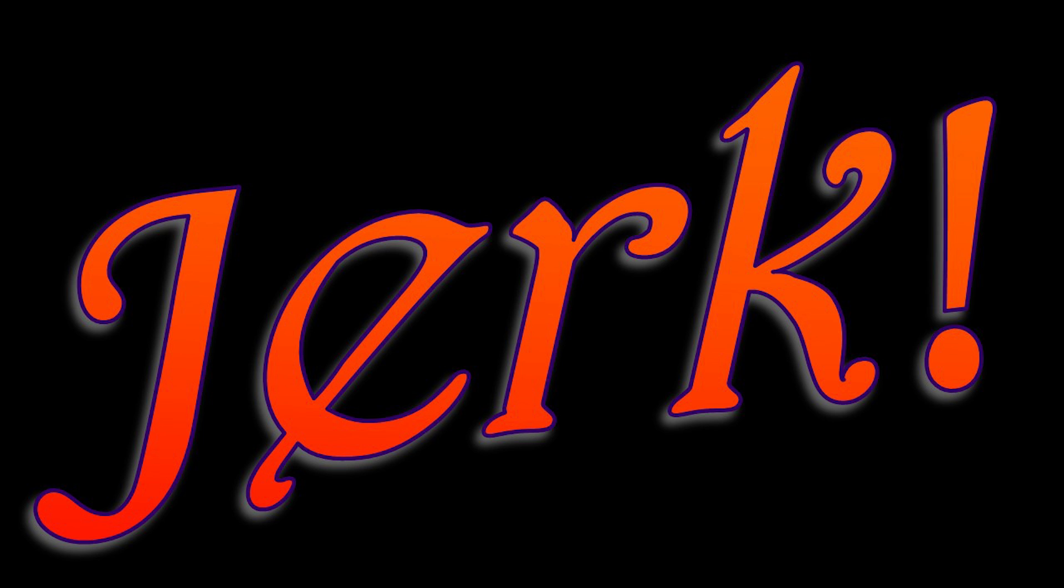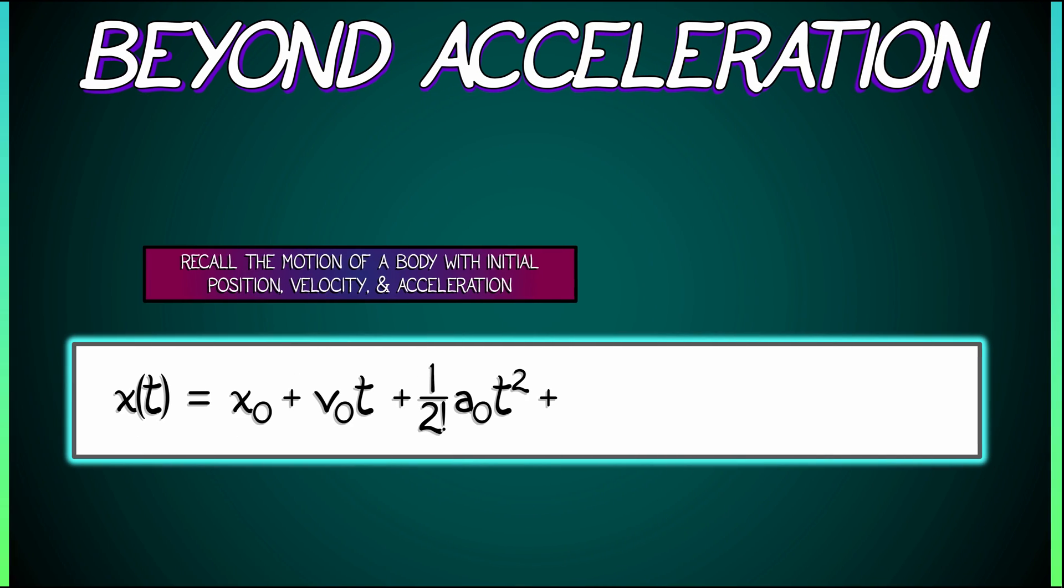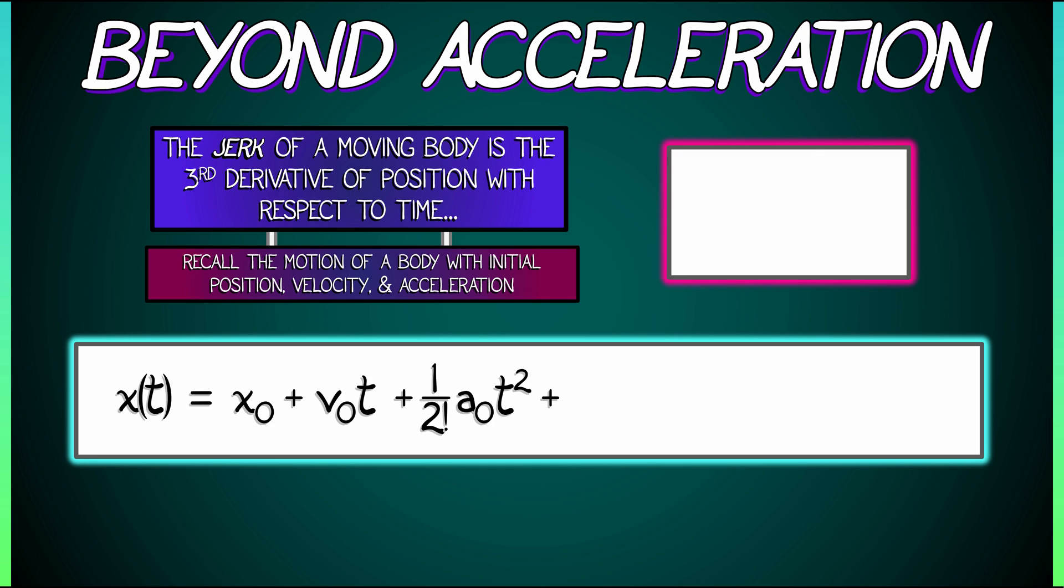Jerk. Yes, that's right. It's called jerk. The jerk of a moving body is the third derivative of position with respect to time. What letter should we use for jerk? Yep, let's use j. It's the third derivative.